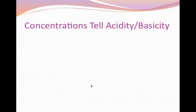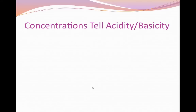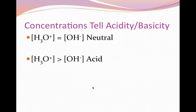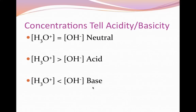The concentrations we get tell us about acidity and basicity. If the hydronium and hydroxide ions are equal, we have a neutral solution. If the hydronium ions are more prevalent, we have an acid. If the hydronium ions are less prevalent than the hydroxide ions, we have a base. This connects back to the Arrhenius and Brønsted-Lowry definitions of acids and bases.